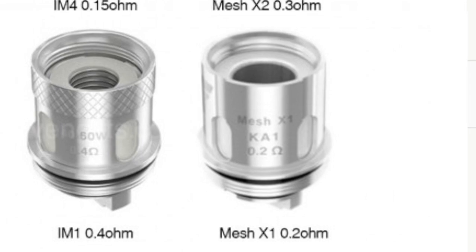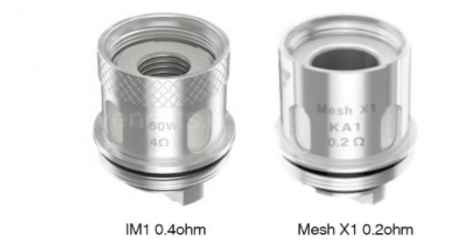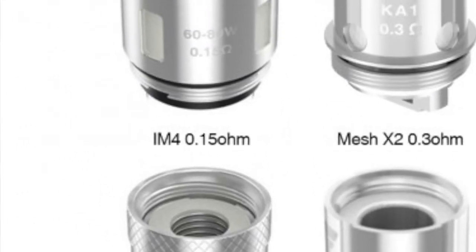You can also buy the 0.4 ohm IM1 for 40 to 60 watt vaping, or the 0.15 ohm IM4 coil for using between 60 to 80 watts. They cost around $12 to $15 per 5-pack for the IM1 coils, or around $20 per 5-pack for the high wattage X1s.